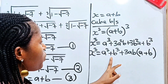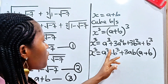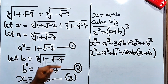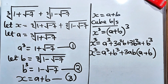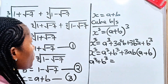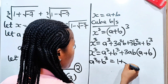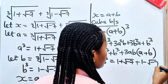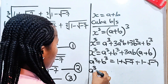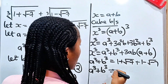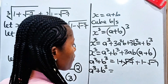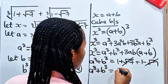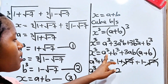Let us start with a³ + b³. Going back to our equations, a³ is 1 plus √(−7) and b³ is 1 minus √(−7). So a³ + b³ equals (1 + √(−7)) + (1 − √(−7)). The √(−7) terms cancel, giving us 1 + 1, which equals 2.